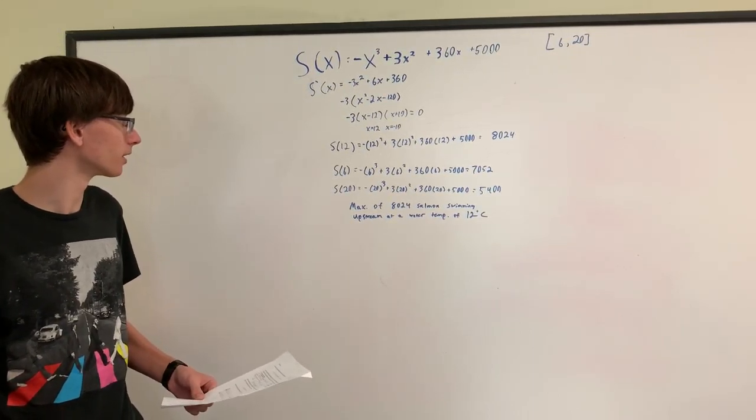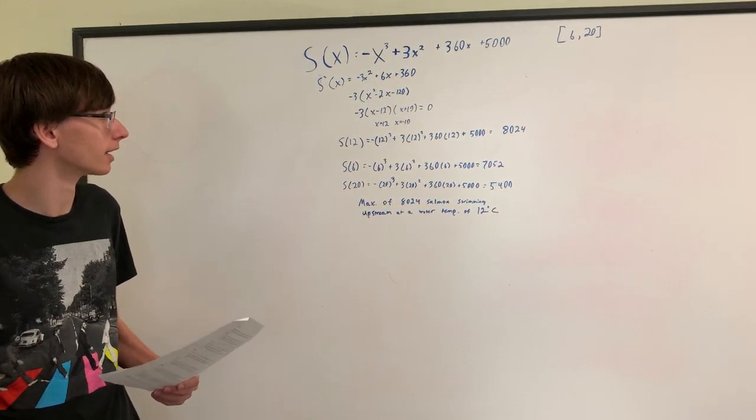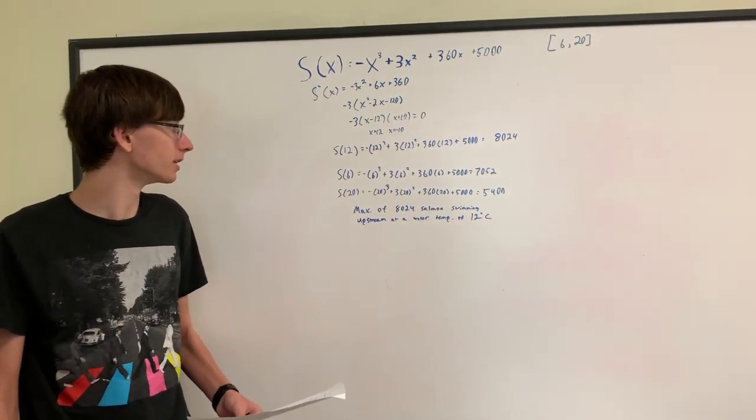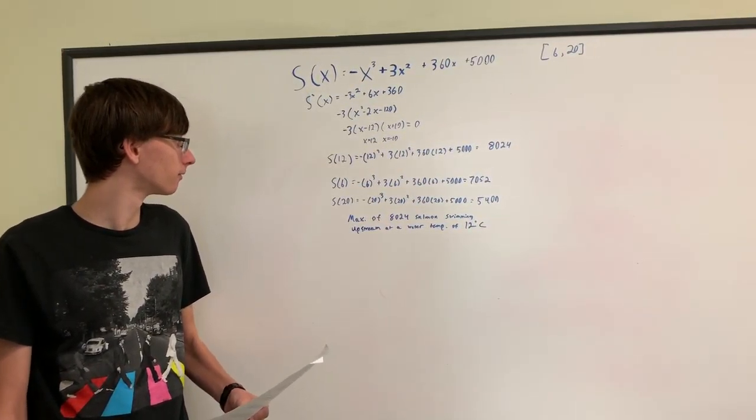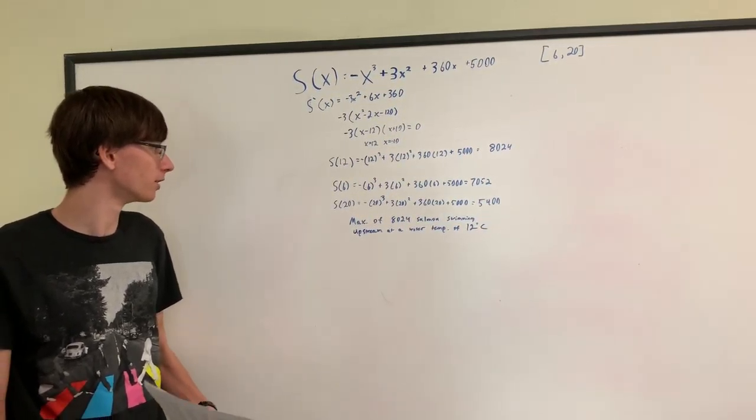So then we plug in the main numbers x equals 12, x equals 6, and x equals 20 into the original equation. For 12, we get the value of 8024. For 6, we get 7052. And for 20, we get 5400.